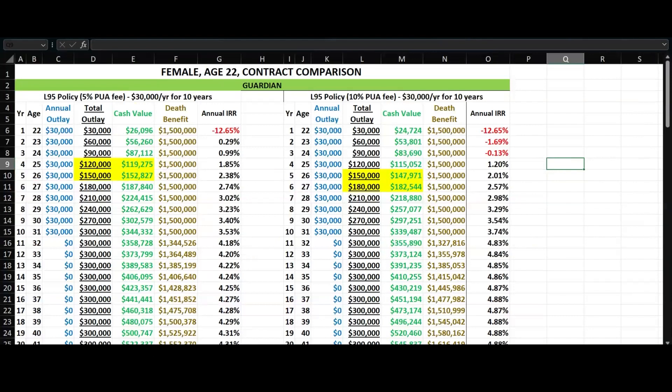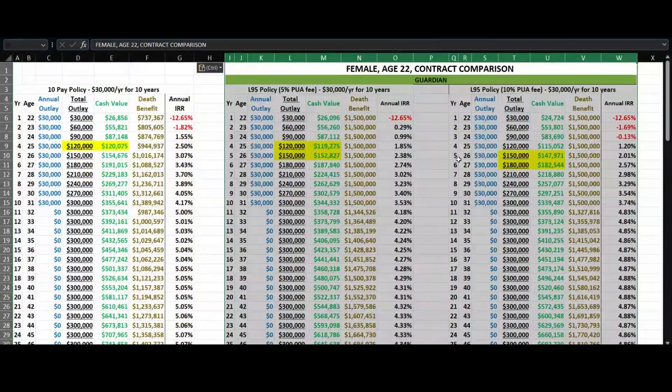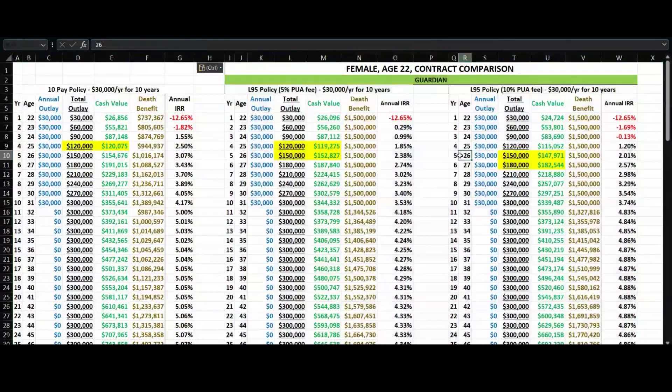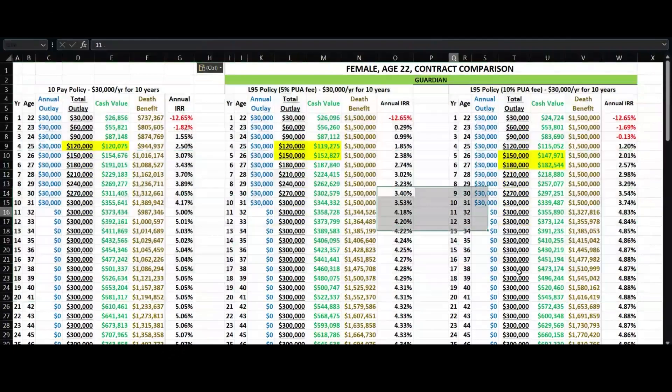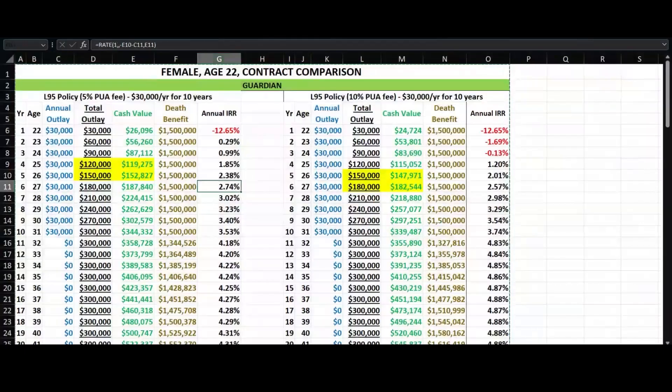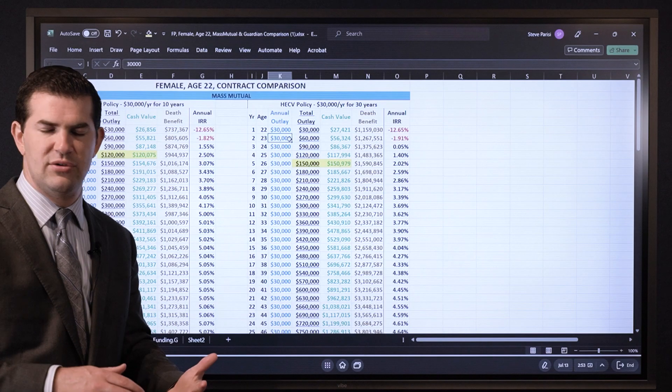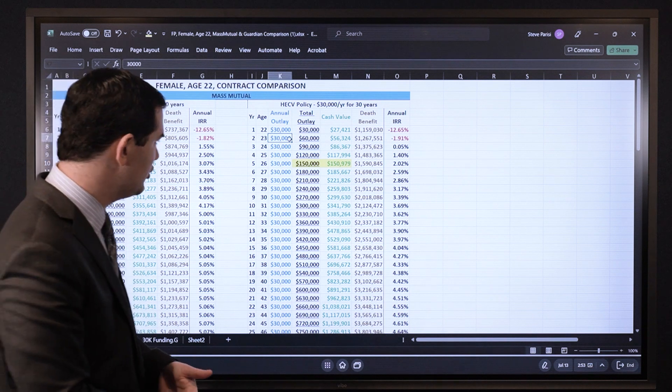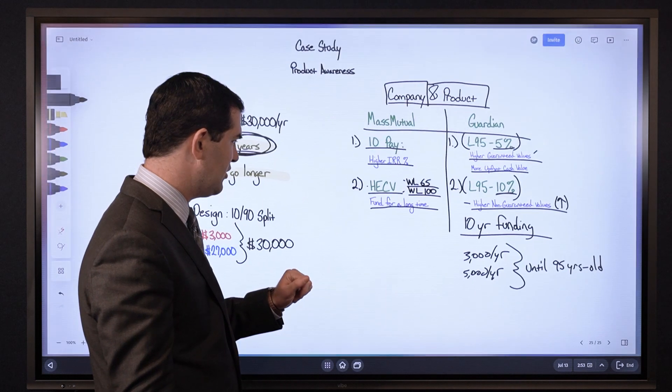If she likes the idea of funding it for 10 years or less, what I would do is look at the guarantees as well if she likes to look at things conservative. If she wants to go longer I would look at that high early cash value but show a couple different variations of funding, maybe for 10, 30, and 50 years so she can see what it looks like. But again the purpose of this is to provide information and some additional options.